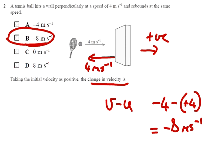Tennis ball hits a wall perpendicularly with a speed of 4 m/s, rebounds at the same speed. We've got 4 m/s going towards, 4 m/s coming back.